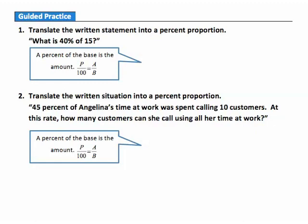Question 1. Translate the written statement into a percent proportion: What is 40% of 15? We start with 100. The percent is 40%, so we write 40 up here. Now for the base — 40% of 15, so the base is 15. Since we have all numbers accounted for, our amount must be the unknown. 'What is' represents the amount in that statement, and that is an unknown amount. So the proportion is: 40 over 100 equals A over 15.